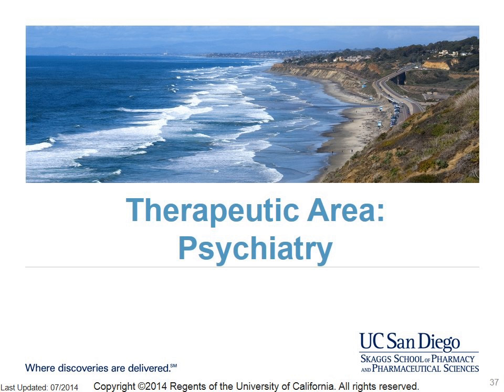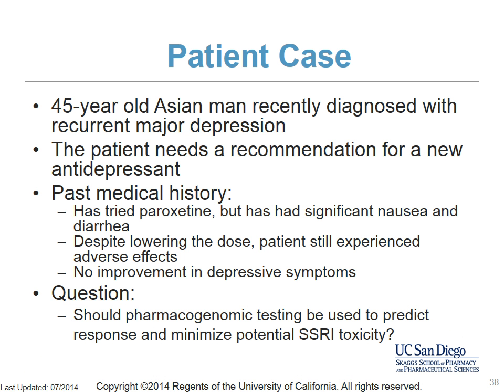The fourth example of pharmacogenetic testing is from the area of psychiatry. A 45-year-old Asian man has been recently diagnosed with recurrent major depression. He would like a recommendation for a new antidepressant. He has tried paroxetine in the past but has had significant nausea and diarrhea. Despite a lower dose, the patient still has adverse effects and no improvement in depressive symptoms. Should pharmacogenomic testing be used to predict his response and minimize potential SSRI toxicity?